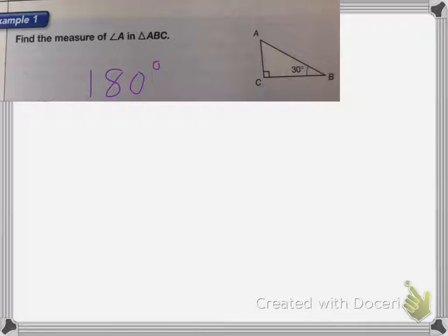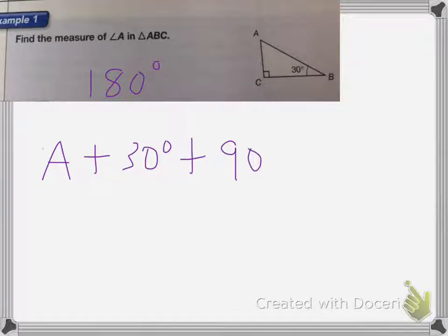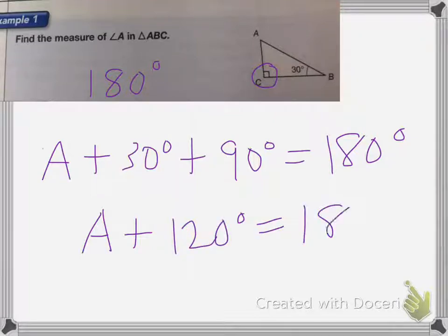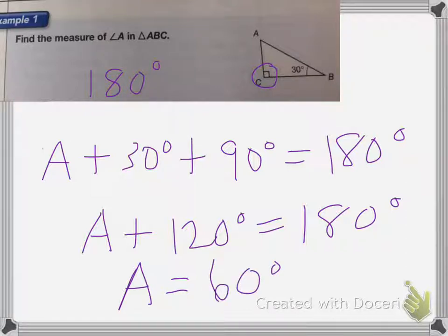I need to figure out what I have first. Angle A plus angle B, which is 30 degrees, plus angle C, which is 90 degrees — and you can tell because of that marking — equals 180 degrees. So A plus 120 degrees equals 180 degrees. Subtracting 120 from 180, angle A equals 60 degrees.